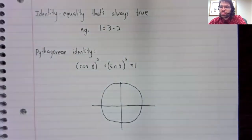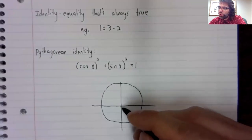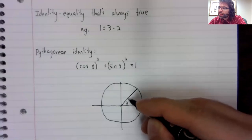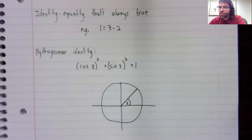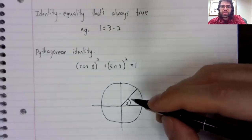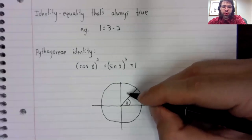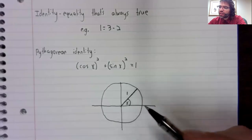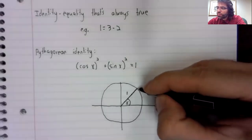It's called the Pythagorean identity because it comes from the Pythagorean theorem. Let's let that be a unit circle and x be this angle.